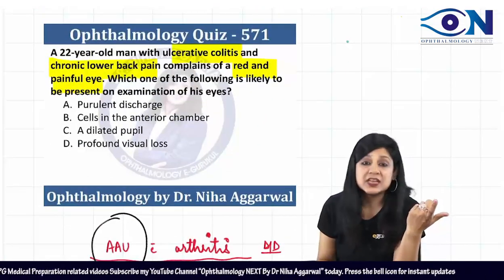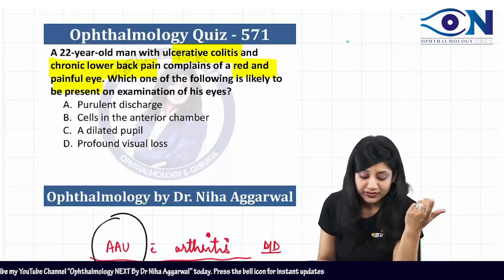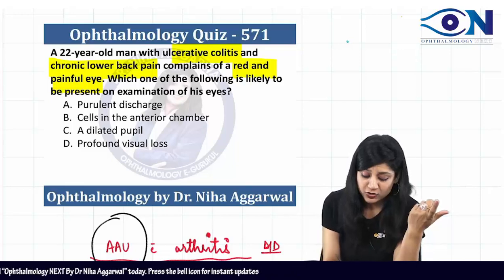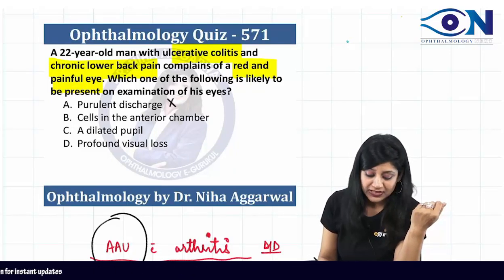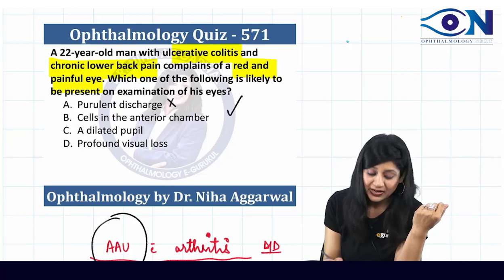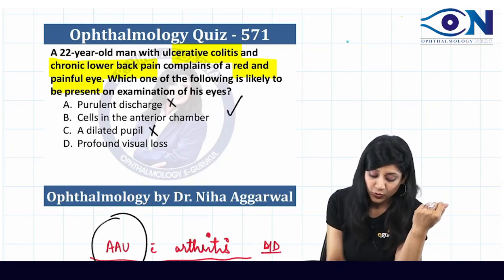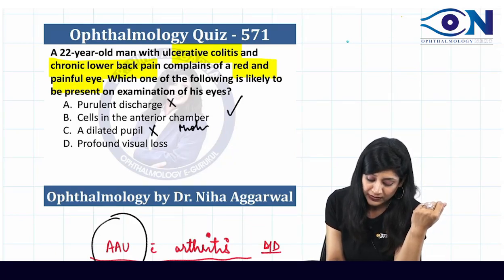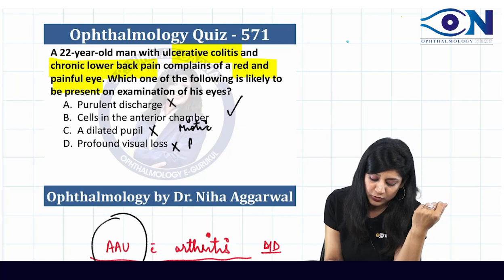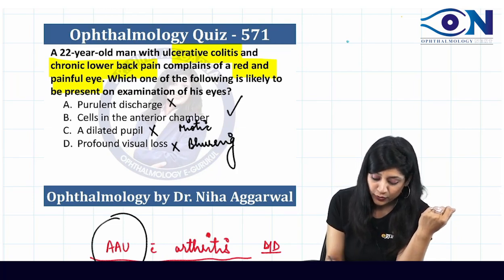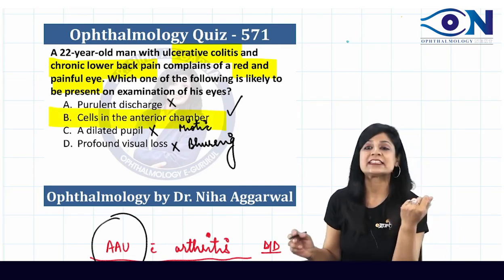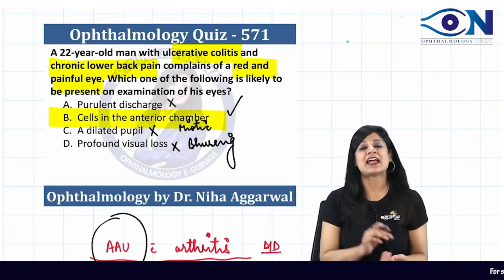Looking at your options: purulent discharge is not a sign of acute anterior uveitis. Cells in the anterior chamber — yes. Dilated pupil — no, because you will have a miotic pupil. Profound visual loss — no, because usually we have just blurring of vision. Therefore, the answer to this question is cells in the anterior chamber.